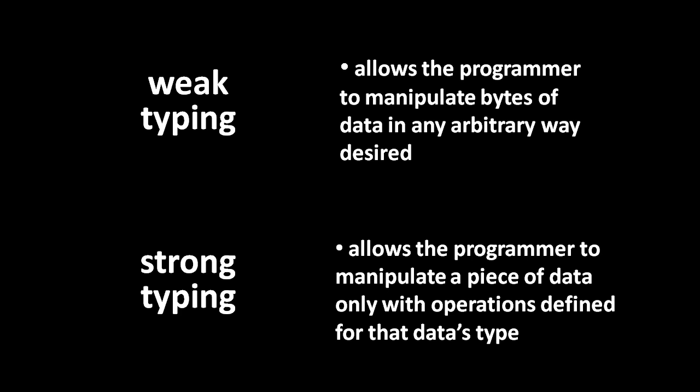So, for example, the built-in types of JavaScript are strongly typed such that we can't do anything with, say, arrays except perform the operations defined to work on arrays. We can't just manipulate the bits of a JavaScript array as we please.